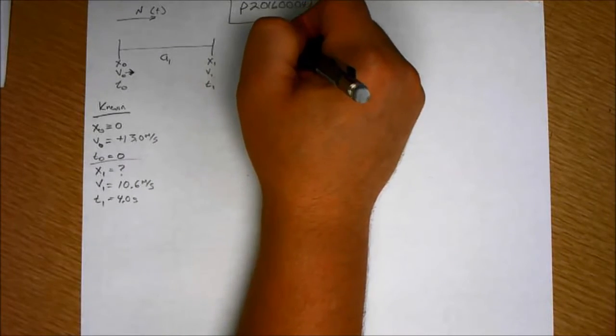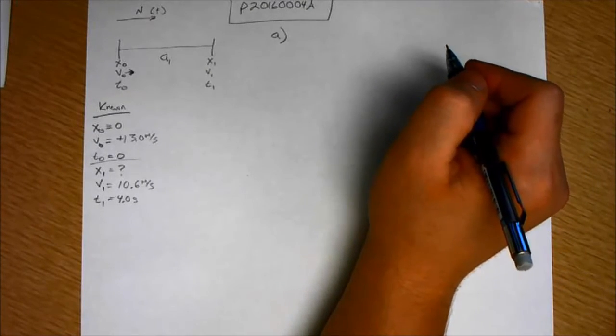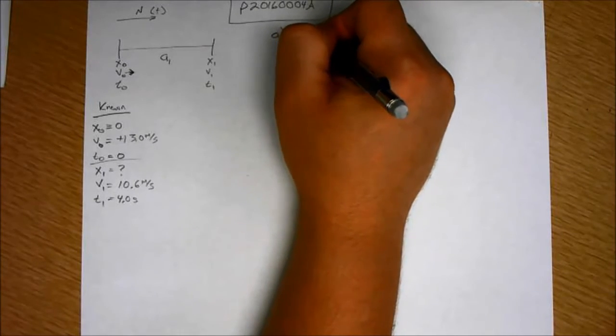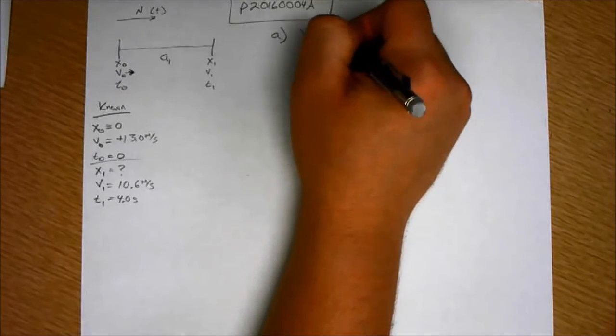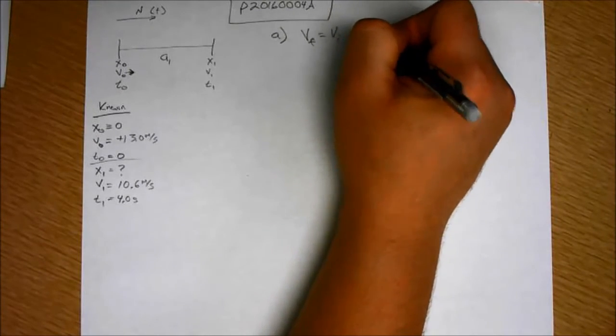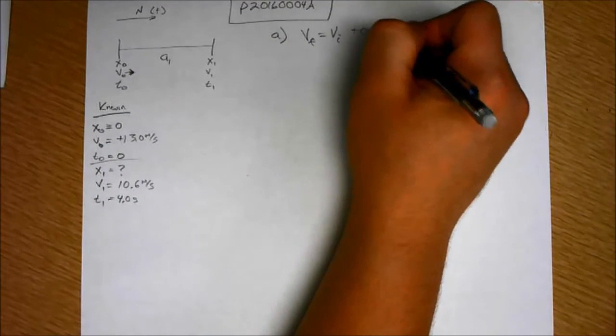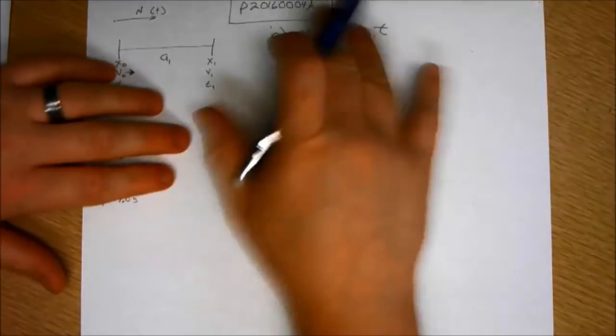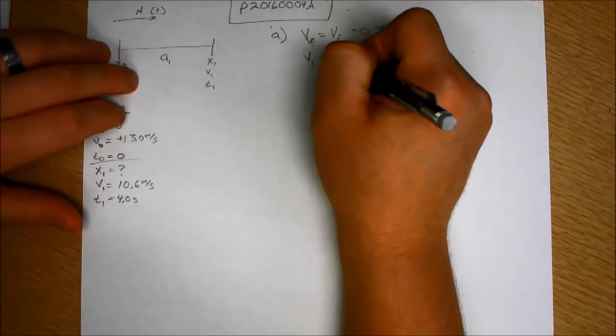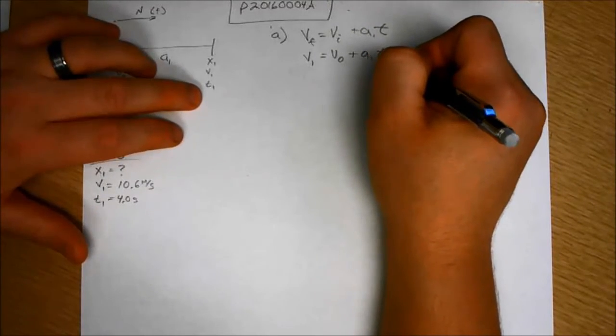So part A says what is the direction of the acceleration? Well I know you can reason through it but let's just look at it in both ways. Let's do the math and then we'll go back and reason through it. Final velocity equals initial velocity plus the acceleration and I'll call this A1, although it's the only acceleration here. Where VF is V1, V initial is V0 plus A1 times T1.